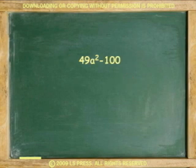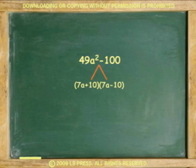Another example: factor 49a squared minus 100. The answer is 7a plus 10 times 7a minus 10, because the square root of 49 is 7, the square root of a squared is a, and the square root of 100 is 10.